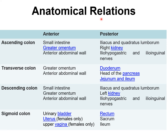About the anatomical relations of the large intestine — we can see anterior and posterior relations of its four parts. The descending colon is posteriorly related to quadratus lumborum and the left kidney, with the iliohypogastric and ilioinguinal nerves also nearby. The sigmoid colon is anteriorly related to the urinary bladder, the uterus in females, and the upper vagina in females; posteriorly it is related to the rectum, sacrum, and ilium.